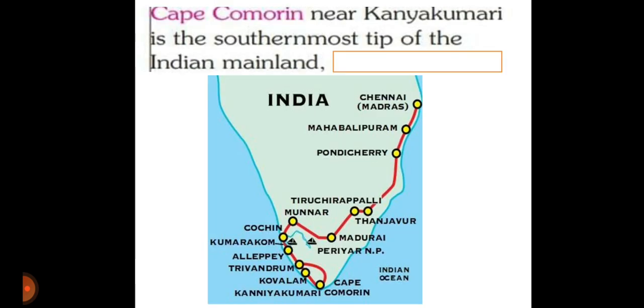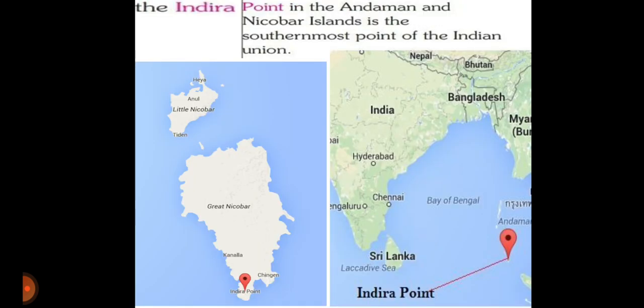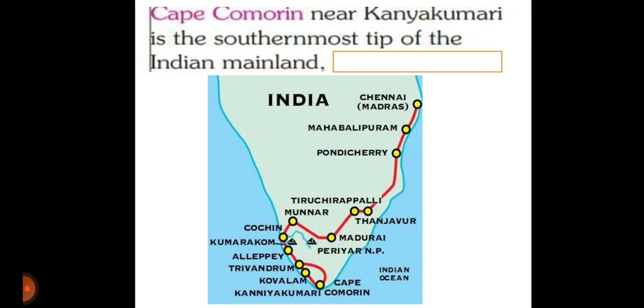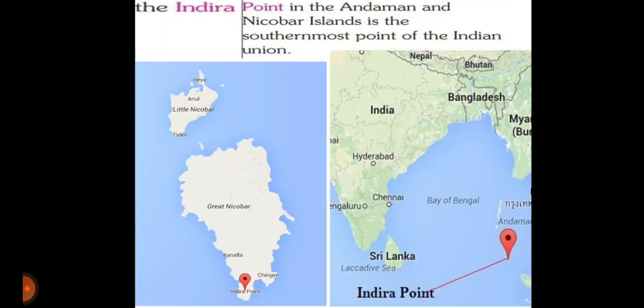Cape Comorin is the southernmost tip of the Indian mainland. The Indira Point in the Andaman and Nicobar Islands is the southernmost point of the Indian Union. Kanyakumari is the southernmost tip of the Indian mainland and the Indira Point is the southernmost point of the Indian Union.